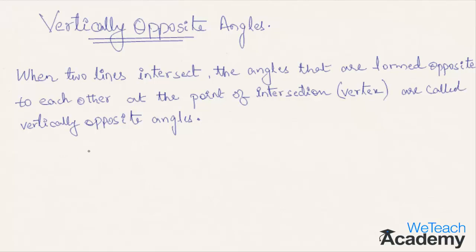Let me explain the same concept with the help of a rough diagram. Here in this diagram, we have two lines intersecting at each other at a point called the vertex.